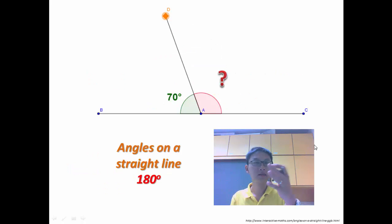Now, let's say I have this angle, I have this straight line, and I'm given that angle BAD is 70 degrees. So what is the unknown angle DAC?